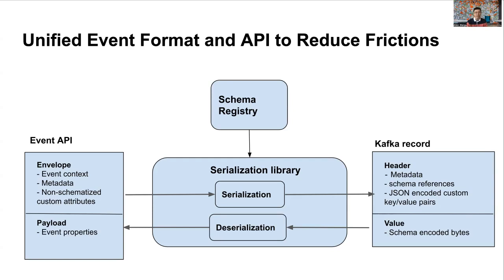We created serialization libraries for both event producers and consumers to interact with this standard event format. In Kafka, the event envelope is stored as a Kafka record header, and the schema-encoded payload is stored as a record value. Our serialization library takes the responsibility of converting back and forth between the event API and the properly encoded Kafka record, so that applications can focus on their main logic.